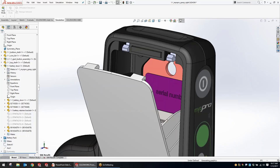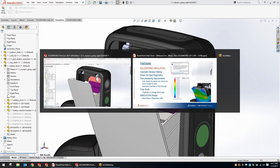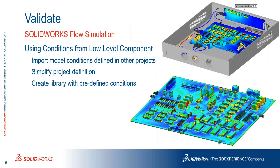Next we want to take a look at SolidWorks flow simulation with 2017. I really just want to highlight two of the main big improvements they've made. The first is that we now have the ability to copy the conditions of a flow simulation from a smaller, lower-level component up to the higher-level assembly. For instance, this PCB board has been analyzed and we've set up the flow simulation for it.